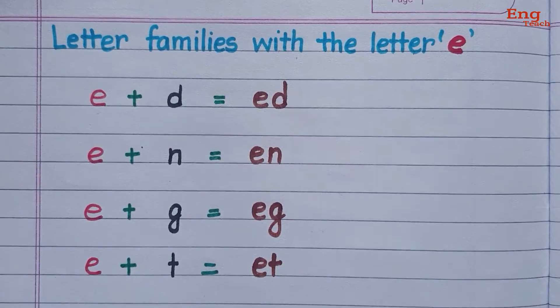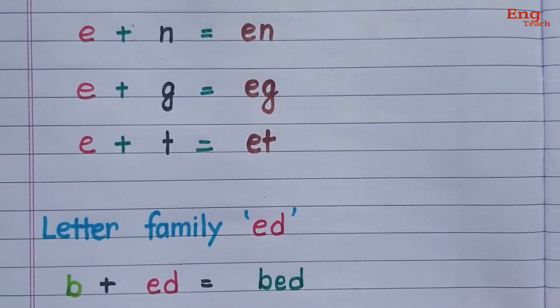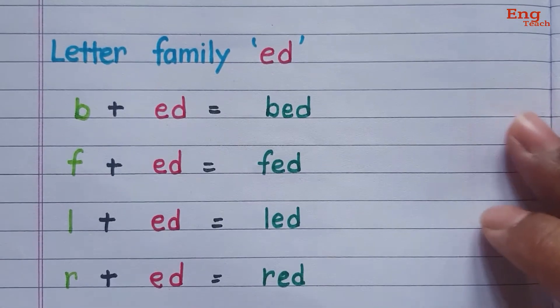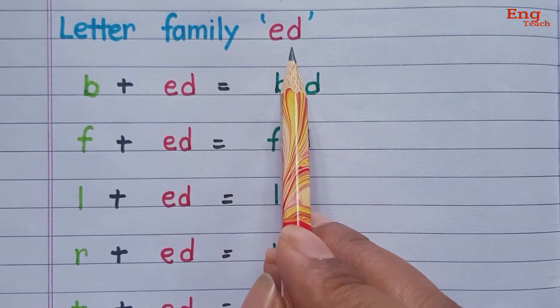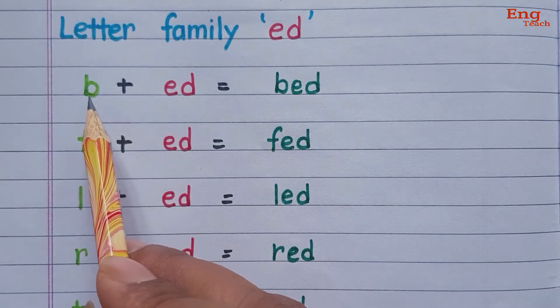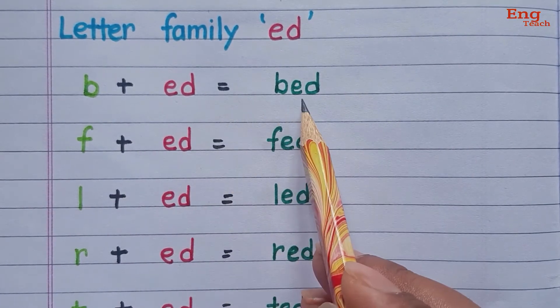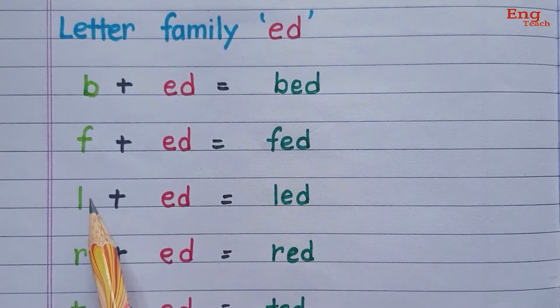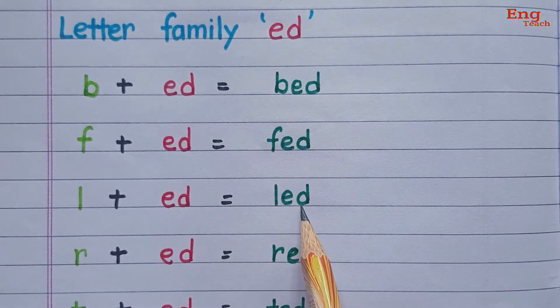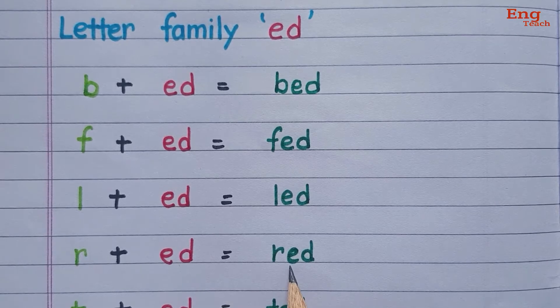First of all, make sure that your children are familiar with these two-letter words, then can start three-letter words. Now let's start three-letter words, CVC words. Let's start three-letter letter family 'ate': bait, bate, fate, fit, late, rate.